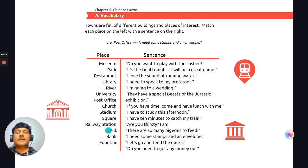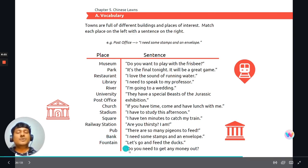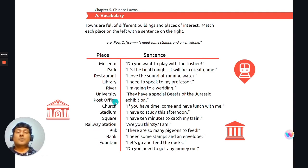Moving on to the next one, which is pub. And that matches with, are you thirsty? I am. A pub is a place to get some drinks. Okay. Bank. Do you need to get any money out? It's associated with withdrawals. And then we have fountain. And the fountain matches with, I love the sound of running water. Because when you open the fountain, or when you put your mouth near the fountain, or when you hear the fountain, you hear water running. Okay. So let's continue now with the next slide.